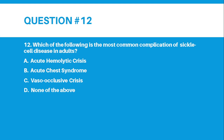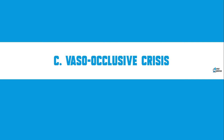Number 12: Which of the following is the most common complication of sickle cell disease in adults? Letter A, Acute Hemolytic Crisis. Letter B, Acute Chest Syndrome. Letter C, Vaso-Occlusive Crisis. Letter D, None of the above. The correct answer for number 12 is Letter C, Vaso-Occlusive Crisis.